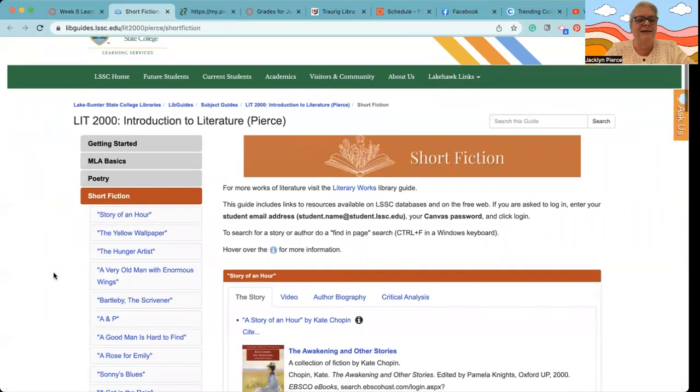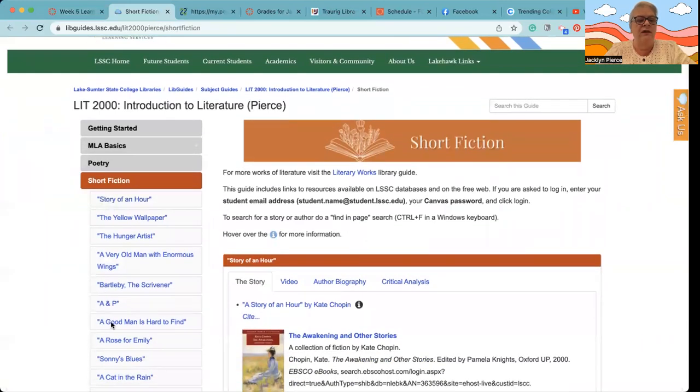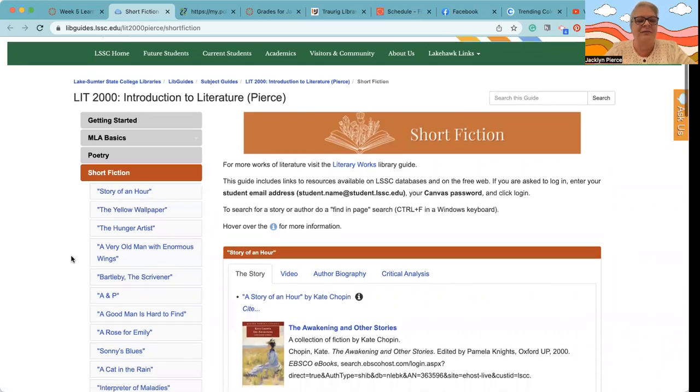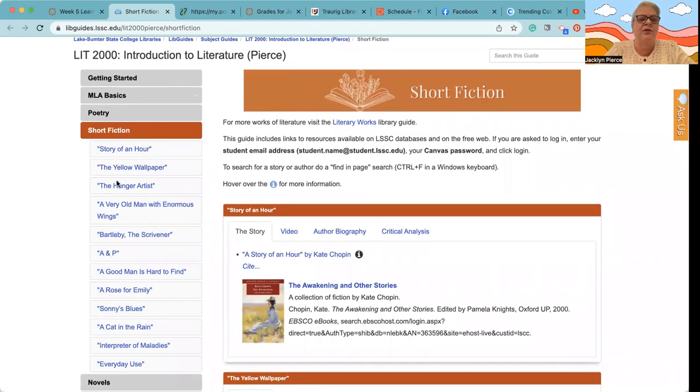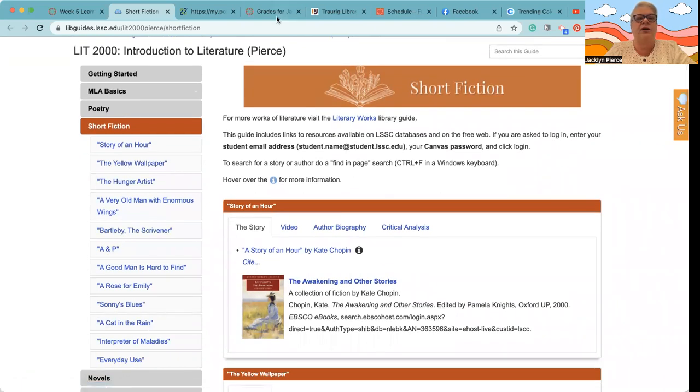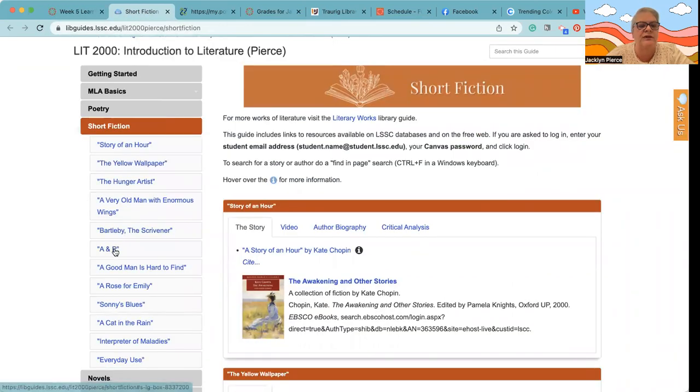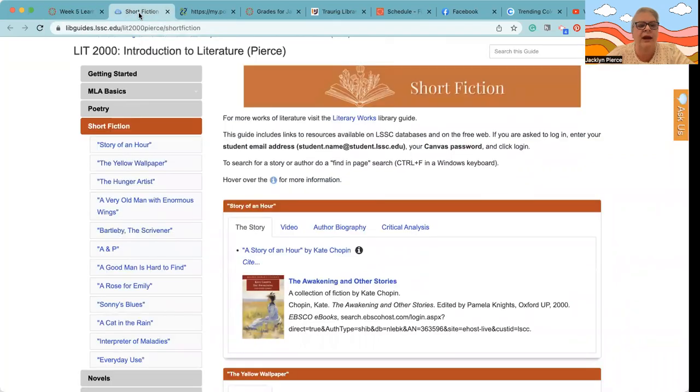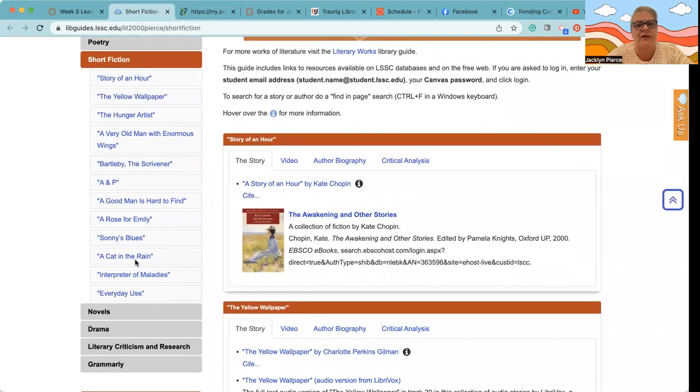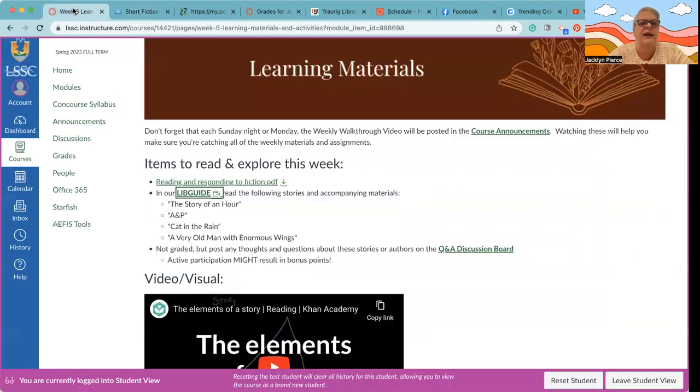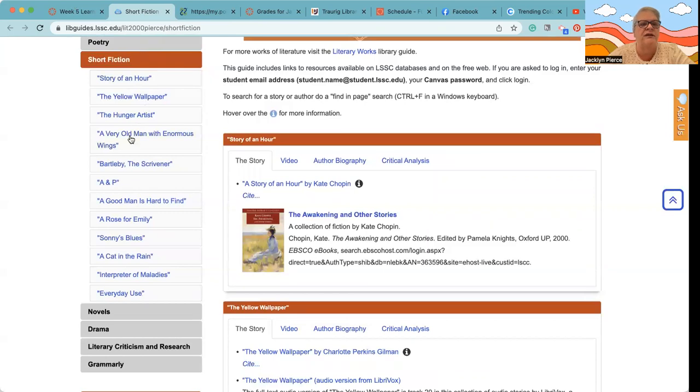Let's take a quick look at those. These are not necessarily in any order coherently other than it just is what it is. If we look at the account, you notice Story of an Hour is the very first one. We are going to be taking a look at A and P, which is a little bit further down on the list, then Cat in the Rain, which is further down, and then A Very Old Man with Enormous Wings, which is back up towards the top.